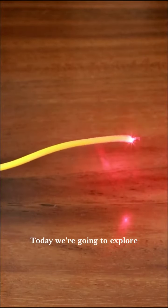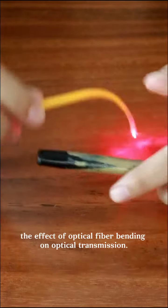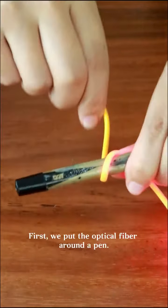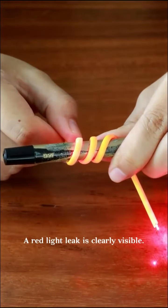Today, we're going to explore the effect of optical fiber bending on optical transmission. First, we put the optical fiber around a pen. A red light leak is clearly visible.